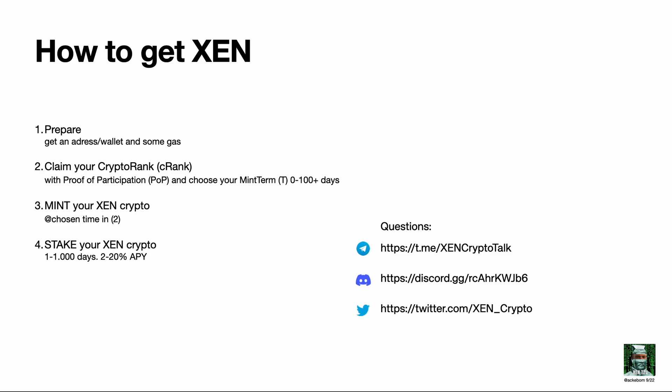Here's what you need to do. Number one, you need to prepare — get a wallet and get some gas. Number two, you claim your so-called crypto rank, your C-rank, with so-called proof of participation, and you choose your time of delayed gratification, your mint term T. Number three, you mint your SEM crypto at the chosen time. And number four, you have the possibility to also stake your SEM crypto.